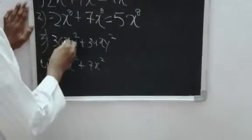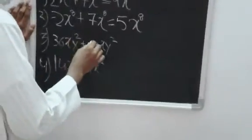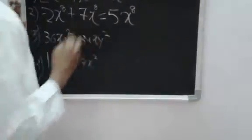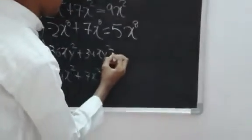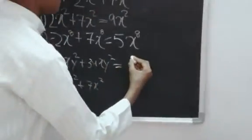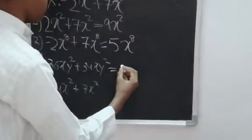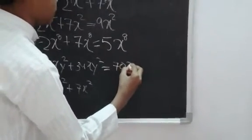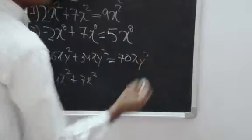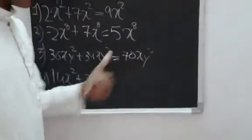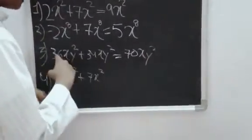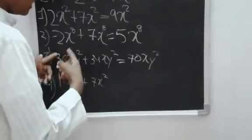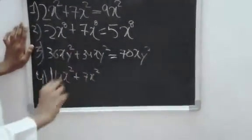Third: 36xy squared plus 34xy squared. We will add this thing. Answer is 70xy squared. So we have to add this number and this part will remain same.